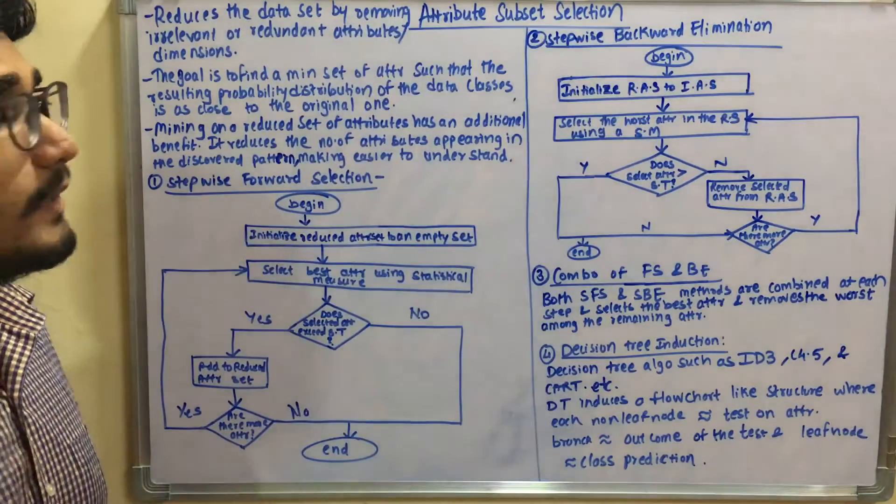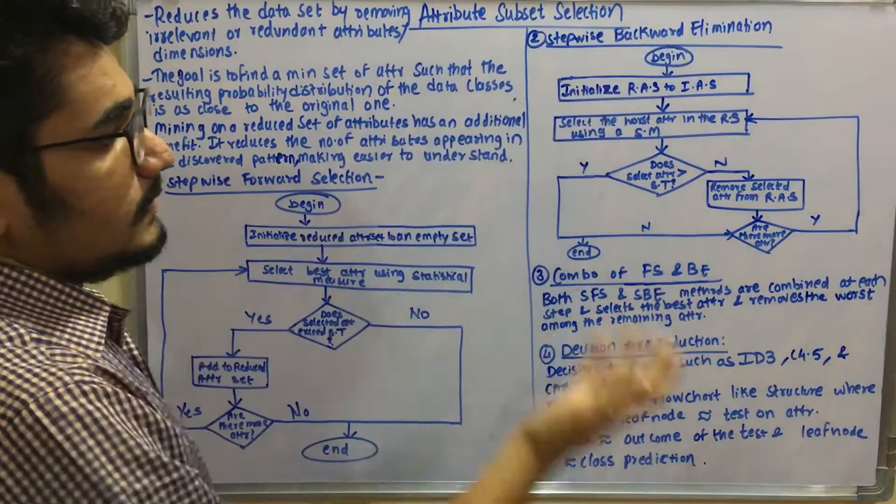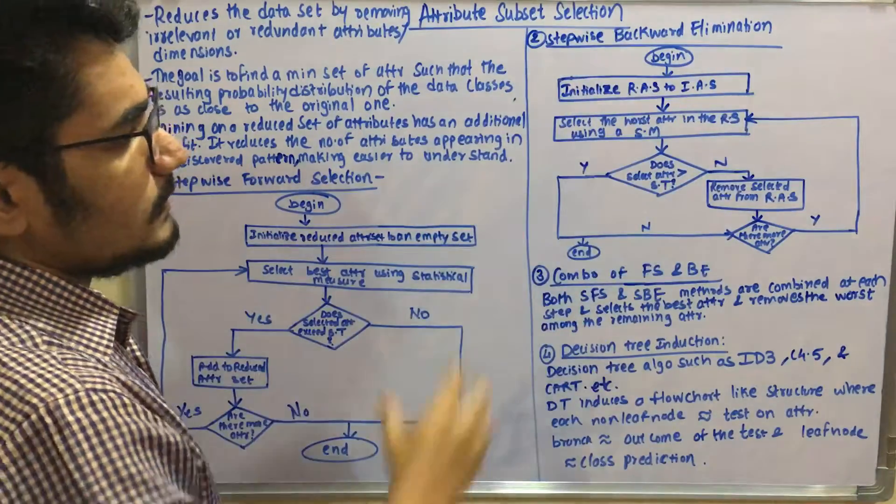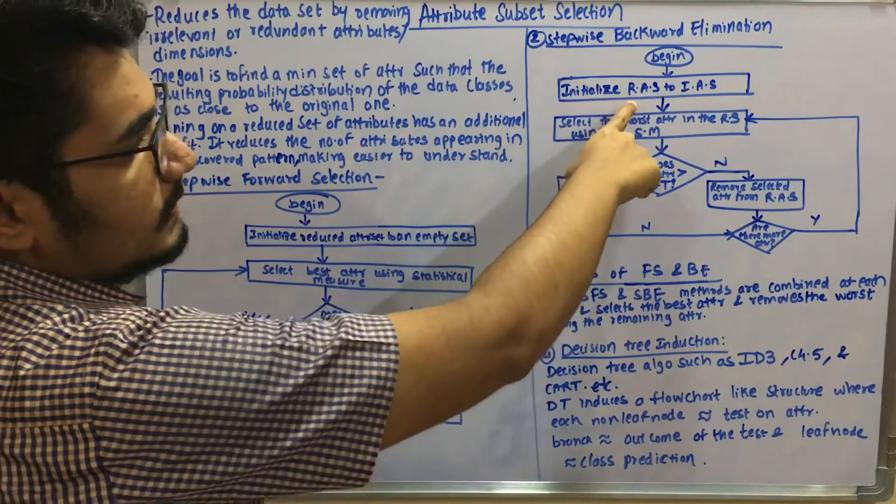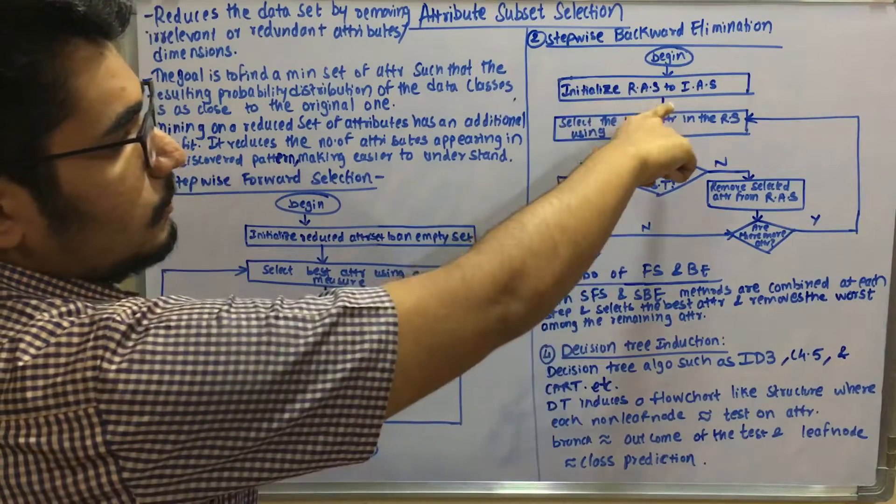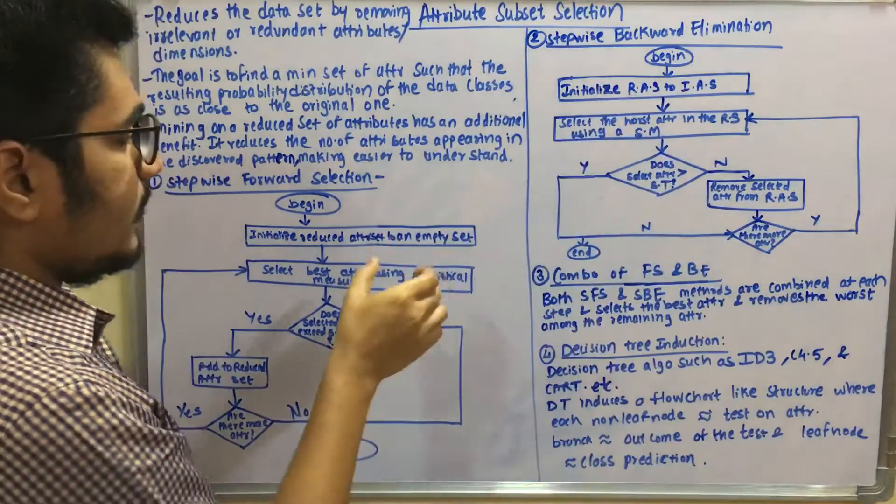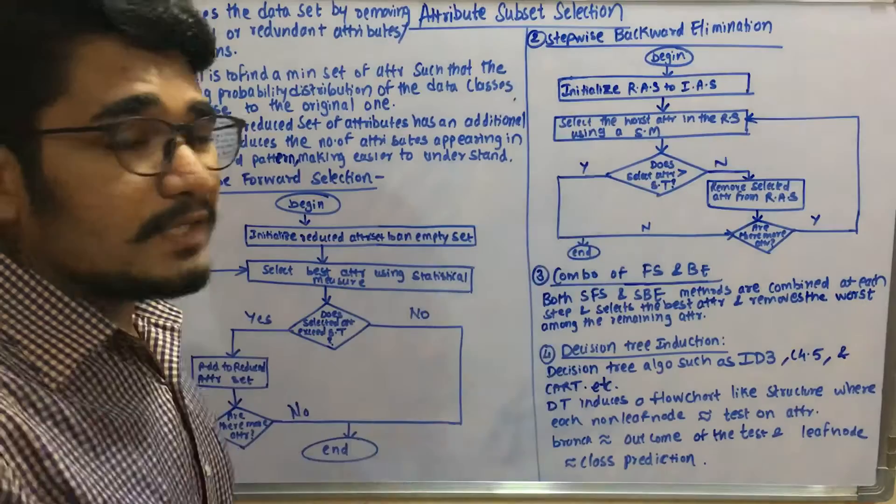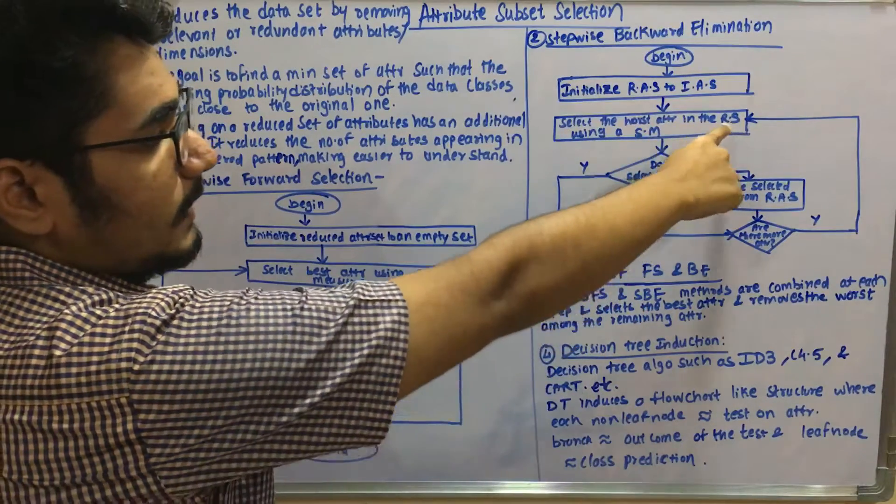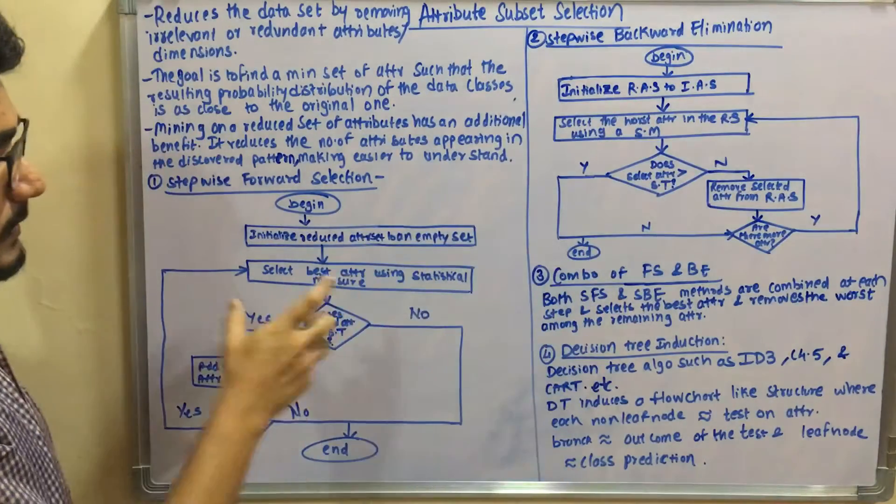Then you have backward elimination. It's the same, but with minor differences. You begin with all the attributes you have. You initialize the reduced attribute set (RAS) to the initial attribute set - here it was empty set, but here it's the initial attribute set. Then you select the worst attribute in the reduced set using a statistical measure.